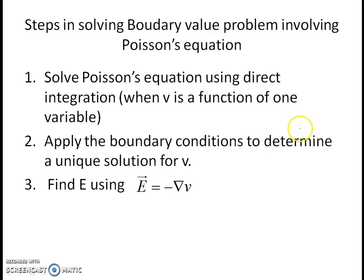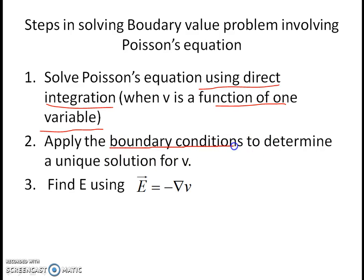We will now discuss the steps in solving boundary value problems that involve Poisson's equation. First, we solve Poisson's equation using the direct integration method when the problem is one-dimensional — that is, when potential varies as a function of only one variable. Then we apply boundary conditions to determine the constants of integration and obtain a unique solution for V. The third step is to obtain the electric field by taking the negative gradient of the potential.